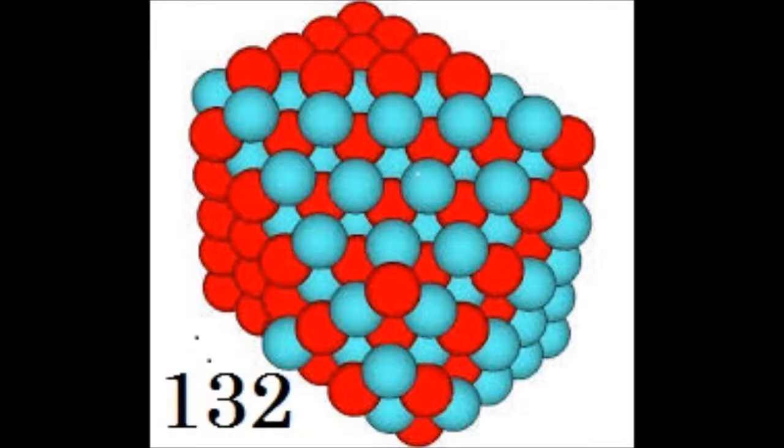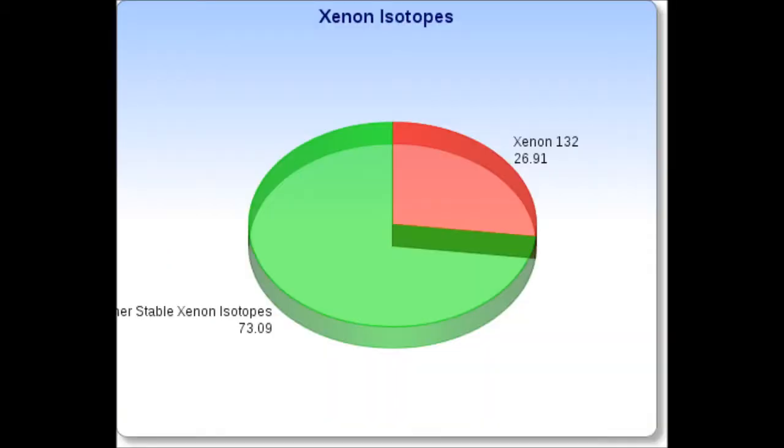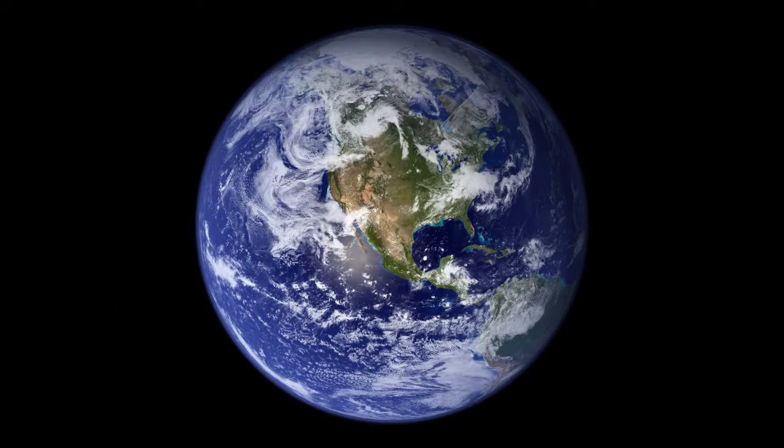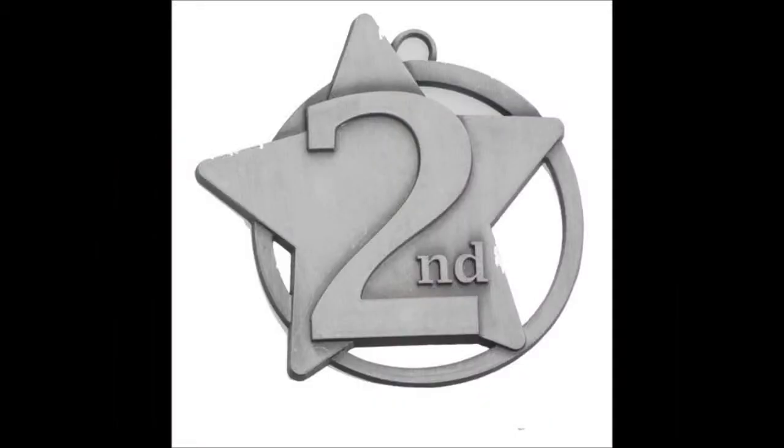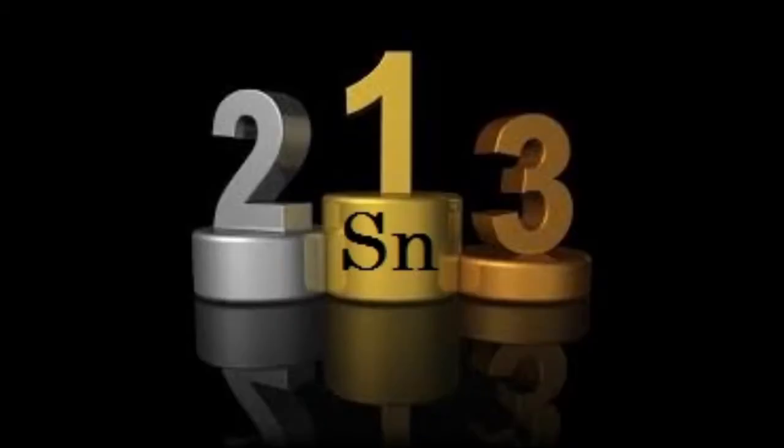Xenon-132 is the most abundant of those that are stable, composing 26.91% of the entire quantity of the gas present in the Earth's atmosphere. Xenon has the second highest number of stable isotopes. Only tin with 10 stable isotopes has more.